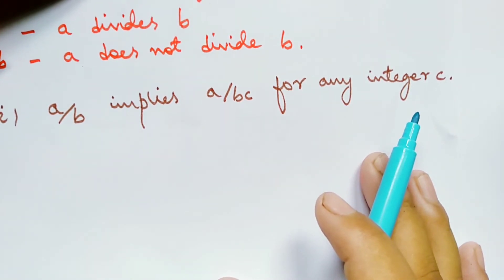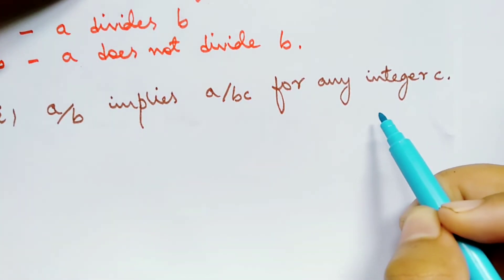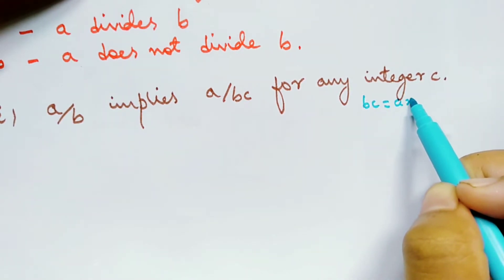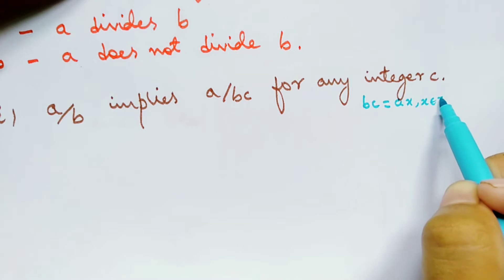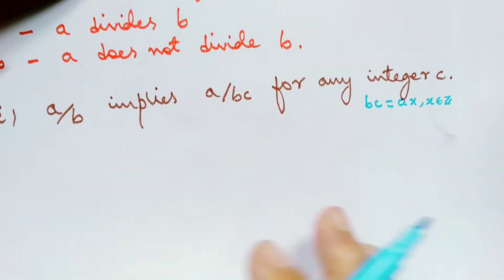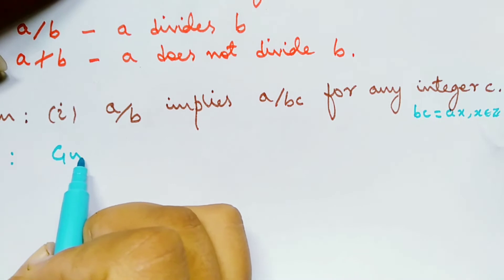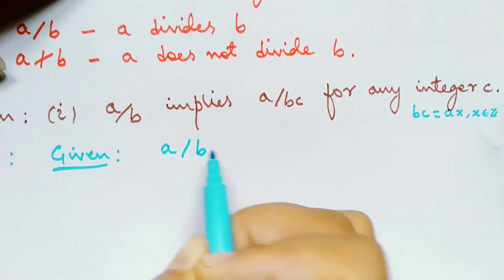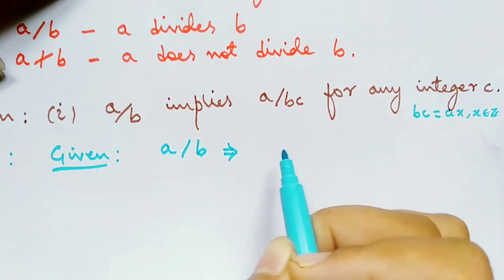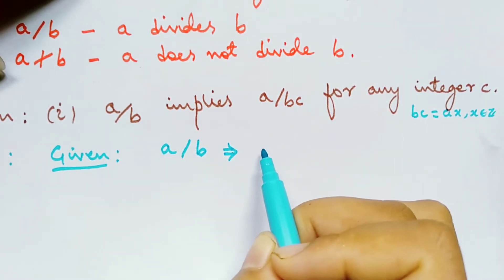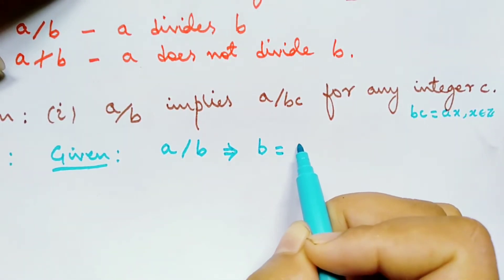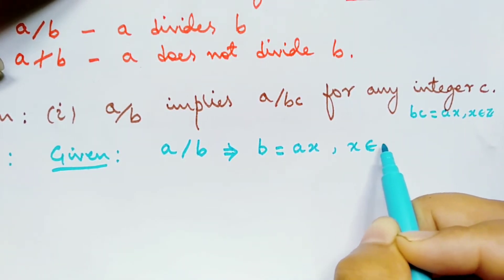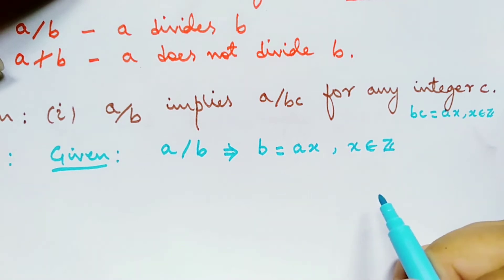To prove that a divides bc, we should be able to write bc as a times some integer. It is given that a divides b, so using the definition of divisibility, we can write b as a times some integer x.